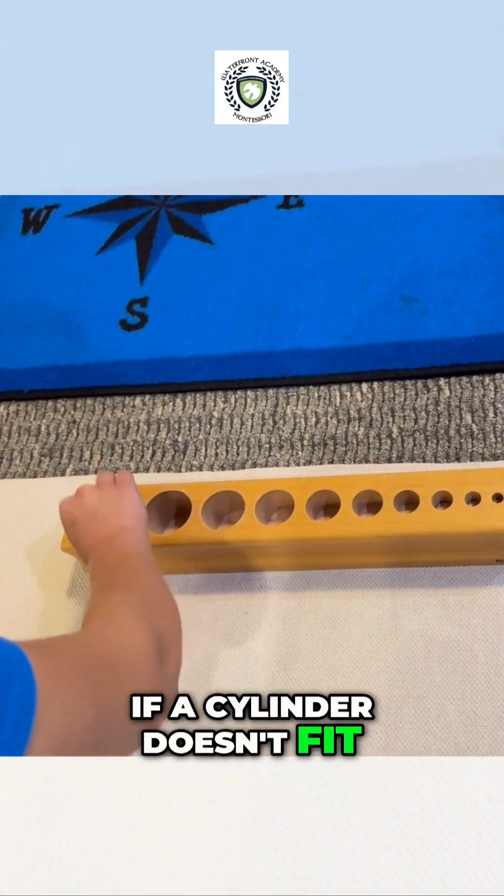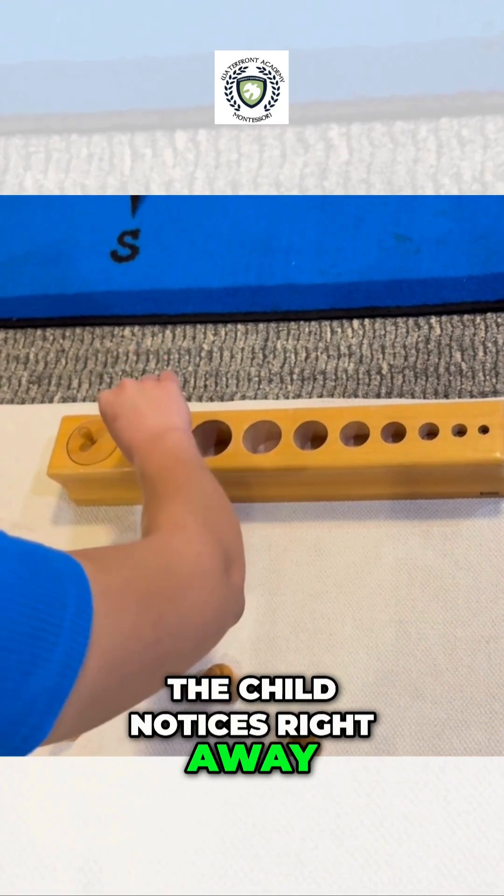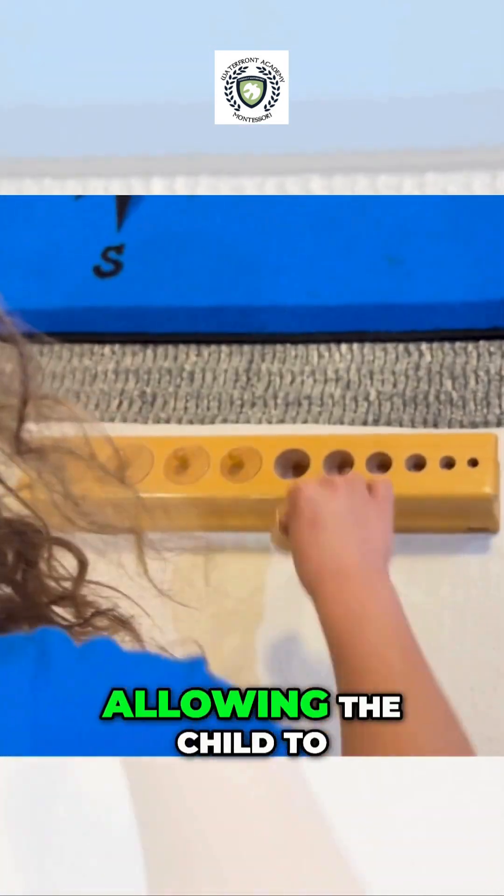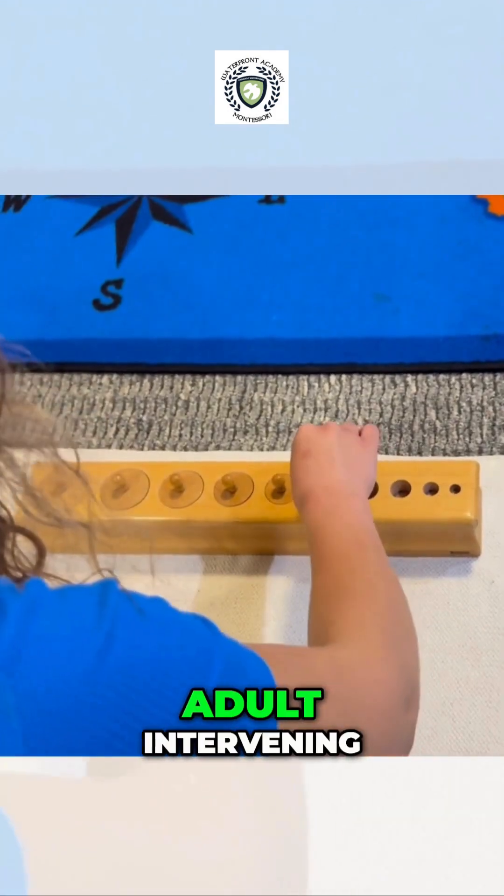If a cylinder doesn't fit, the child notices right away. The material itself provides control of error, allowing the child to self-correct without an adult intervening.